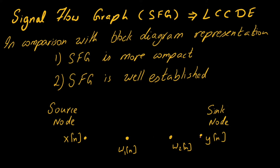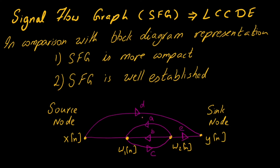In this example we have four nodes. These nodes are interconnected by means of branches, and each of these branches has a multiplier — in our case a, b, c, d, and e — representing the constant coefficients in the LCCDE expressions. If a branch doesn't have a multiplier, we assume it is a unity gain branch. Furthermore, if we want to delay x(n), we include z-inverse, so we would have x(n−1).